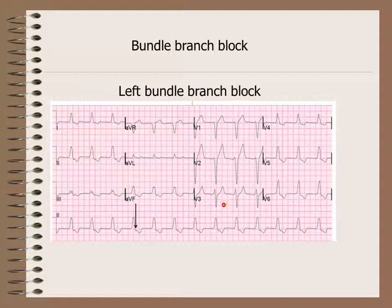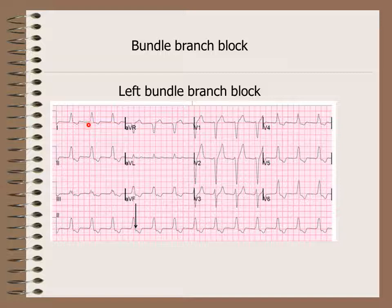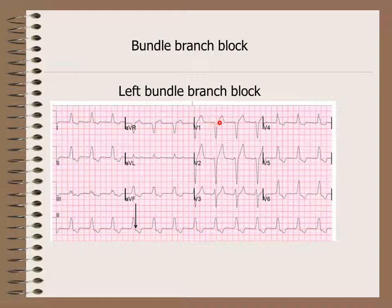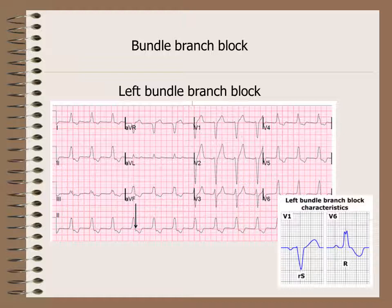In this next example, the heart rate is above 60 beats per minute. The PR interval is normal — about one big square. The QRS duration is more than three small squares, so it is more than 120 milliseconds. Here we can see the M pattern in V6, which characterizes the left bundle branch block.